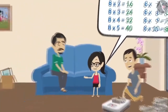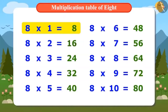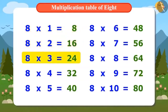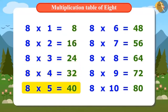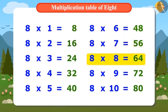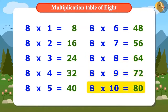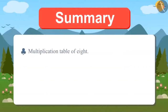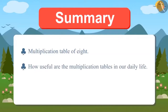Let's memorize the table of 8 for now. Vandana has even started singing: 8 ones are 8, 8 twos are 16, 8 threes are 24, 8 fours are 32, 8 fives are 40, 8 sixes are 48, 8 sevens are 56, 8 eights are 64, 8 nines are 72, 8 tens are 80. Today we have learned the multiplication table of 8 and how useful multiplication tables are in our daily life.